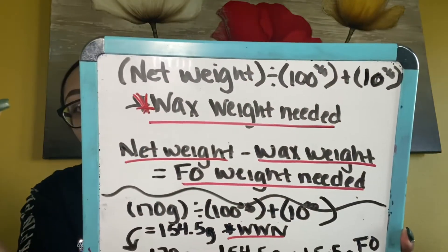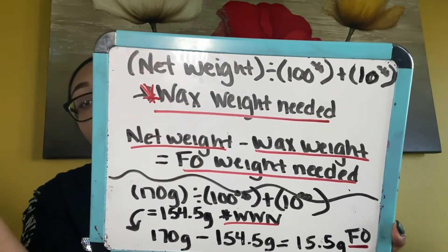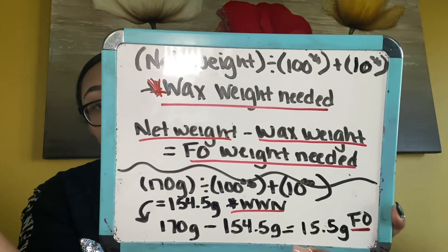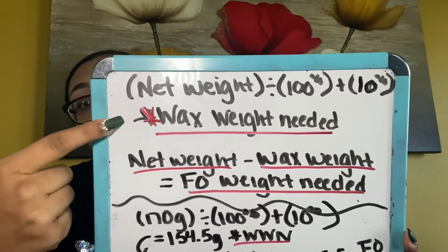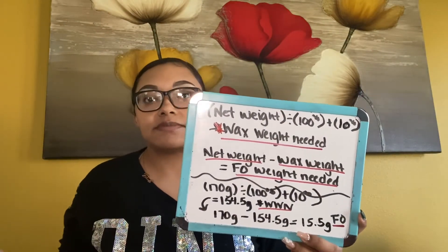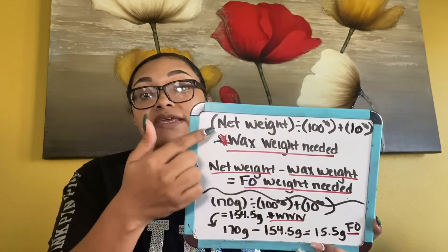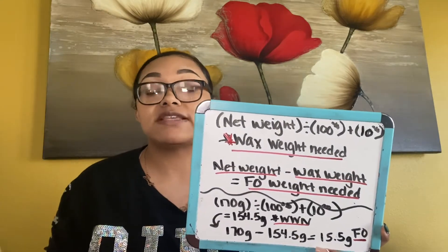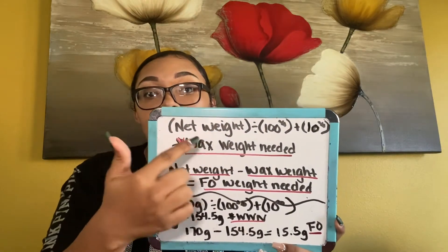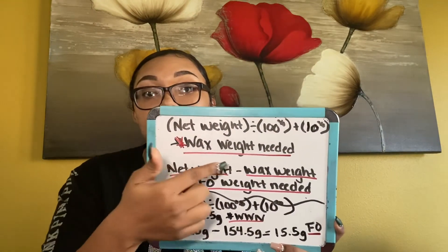So: Net Weight divided by (100 plus your fragrance load) gives you your wax weight needed for the vessel. Your net weight is how much wax your vessel can hold — if it holds six ounces, that's your net weight. I like using grams for accuracy, so six ounces equals 170 grams. That formula gives you your wax weight needed.